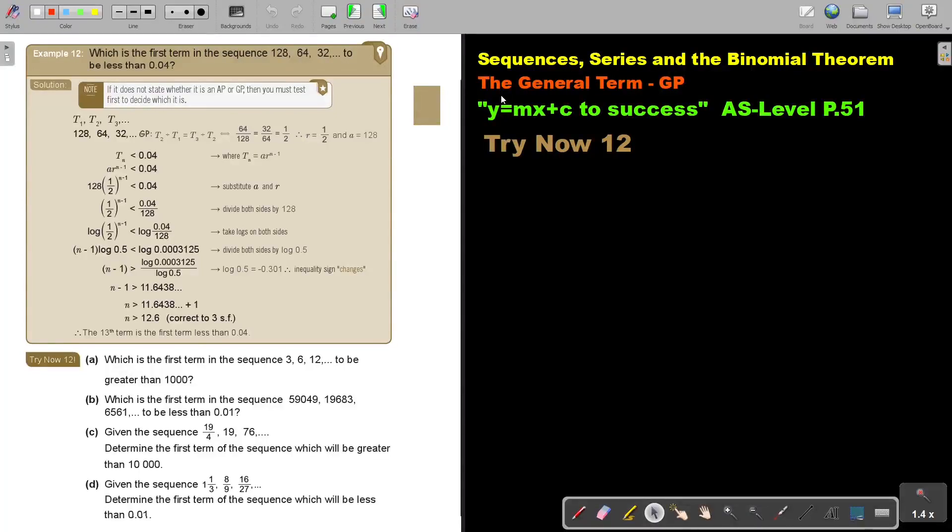In this video, we will continue with the general term of a GP. You will find this on page 51 in the Namibia AS Level Mathematics textbook. Which is the first term in this sequence to be less than 0.04? If it does not state whether it's an AP or a GP, then you must test first to decide which it is.